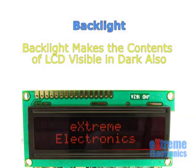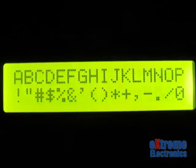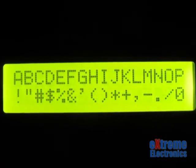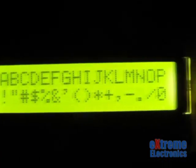LCD modules have a built-in backlight that makes it possible to read the text even in a dark environment. You can choose from a variety of backlight colors, the cheapest and most common being the green backlight. Other common backlight colors include blue.